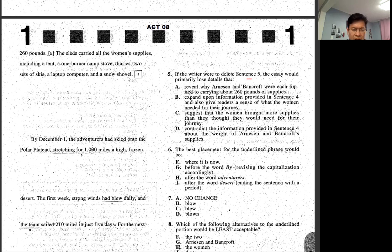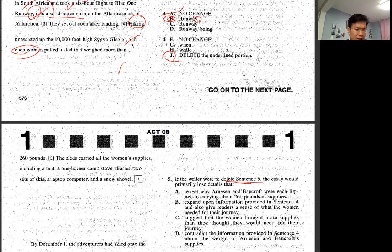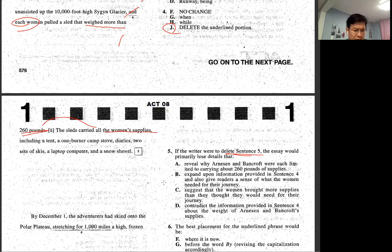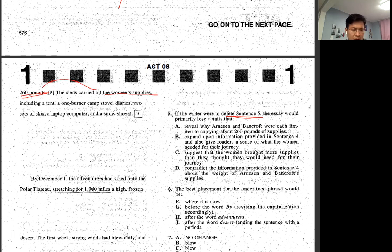And the writer will delete sentence five. Let's see, since it's five, the sled carry, carried all the women's supplies including tent and blah blah blah. You need to have this idea because it says weight, weight more than 260 pounds, and that's what the following sentence actually talks about. Because of that, if you take this one out, it will lose detail of whatever the previous sentence is talking about.